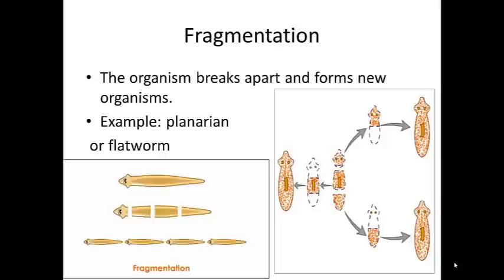Fragmentation is shown here with the planaria, or flatworm. Fragmentation means the organism can break apart and form two new organisms — different parts can each form into new organisms, eventually growing new parts. This is called fragmentation.